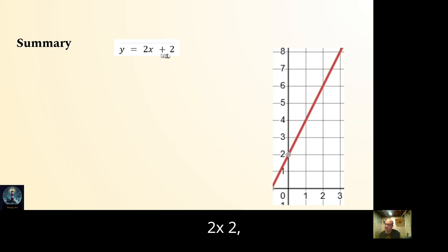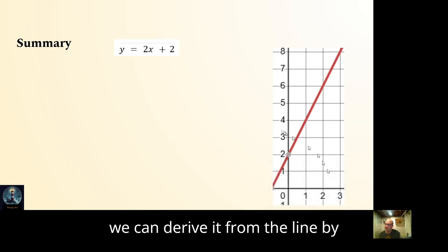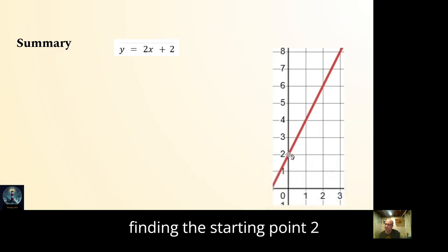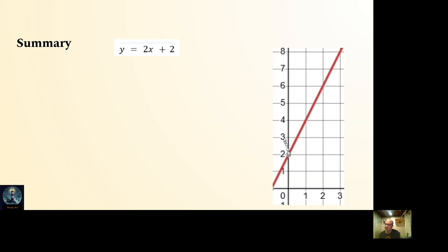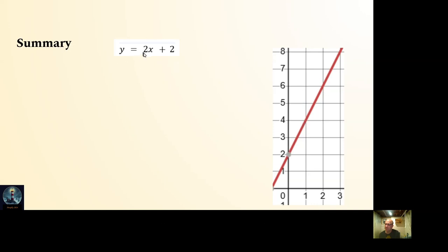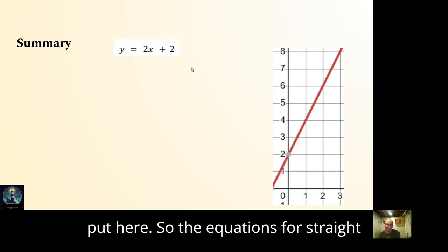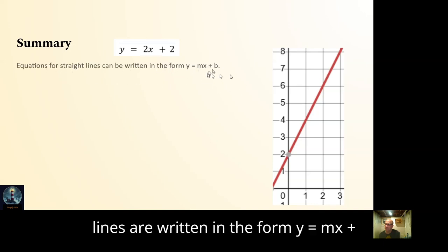In summary, if we have the equation y equals two x plus two, we can derive it from the line by finding the starting point — two — and using the slope. The equations for straight lines are written in the form y equals mx plus b.